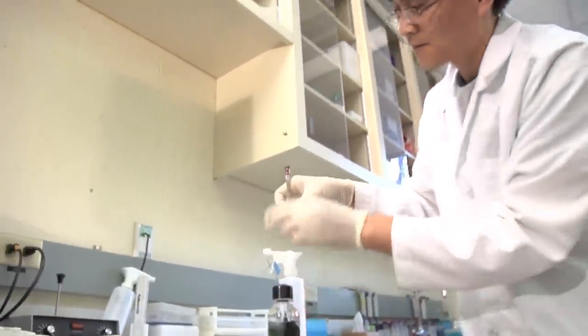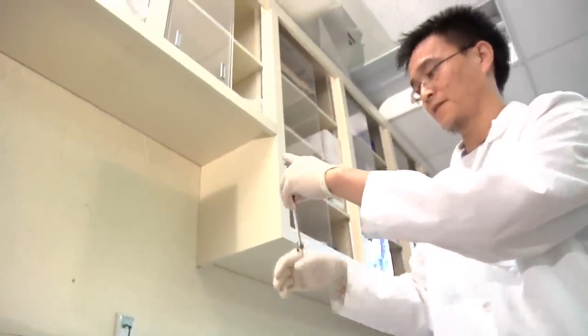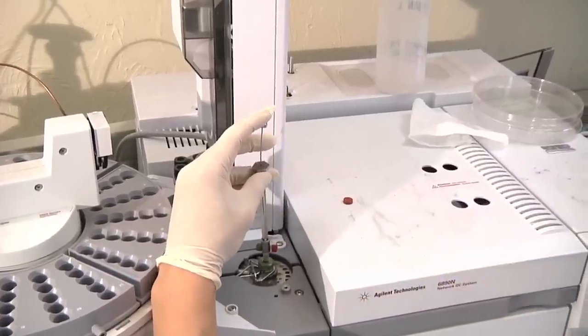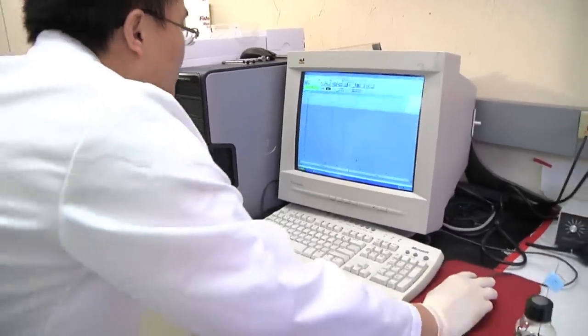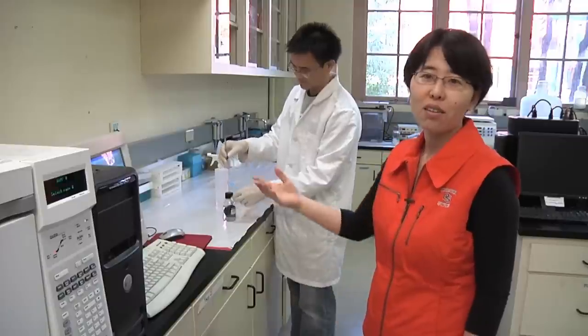And Shuta is collecting samples right now. And he's collecting samples and analyzed using the gas chromatography. And a few minutes later, you can see the data coming out from the computer. It's going to tell you how many percent of hydrogen you have there and how many percent of other gases you can get from the reactor.